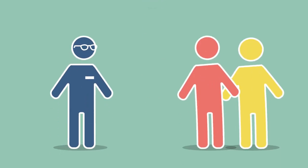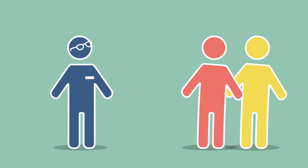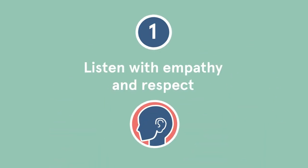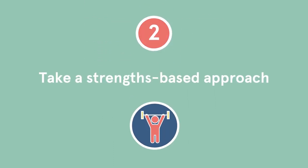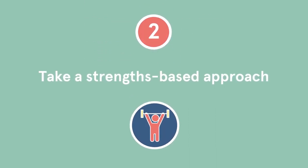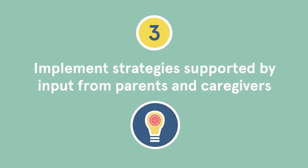So, when engaging the parents or caregivers of a child that is having difficulty in the classroom, remember to: 1. Listen with empathy and respect. 2. Take a strengths-based approach. 3. Implement strategies supported by input from parents and caregivers.